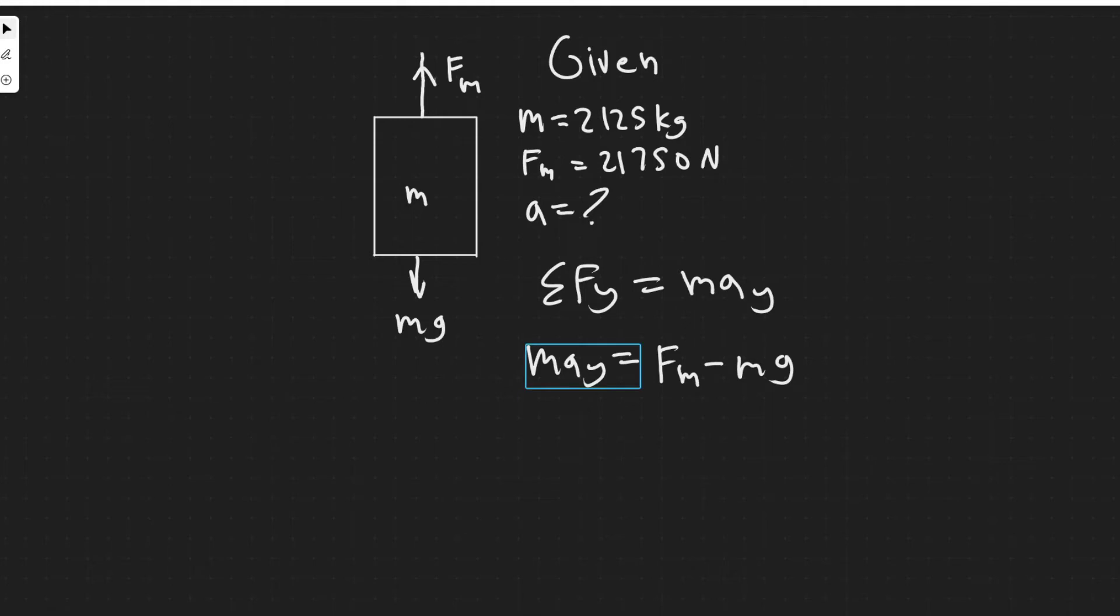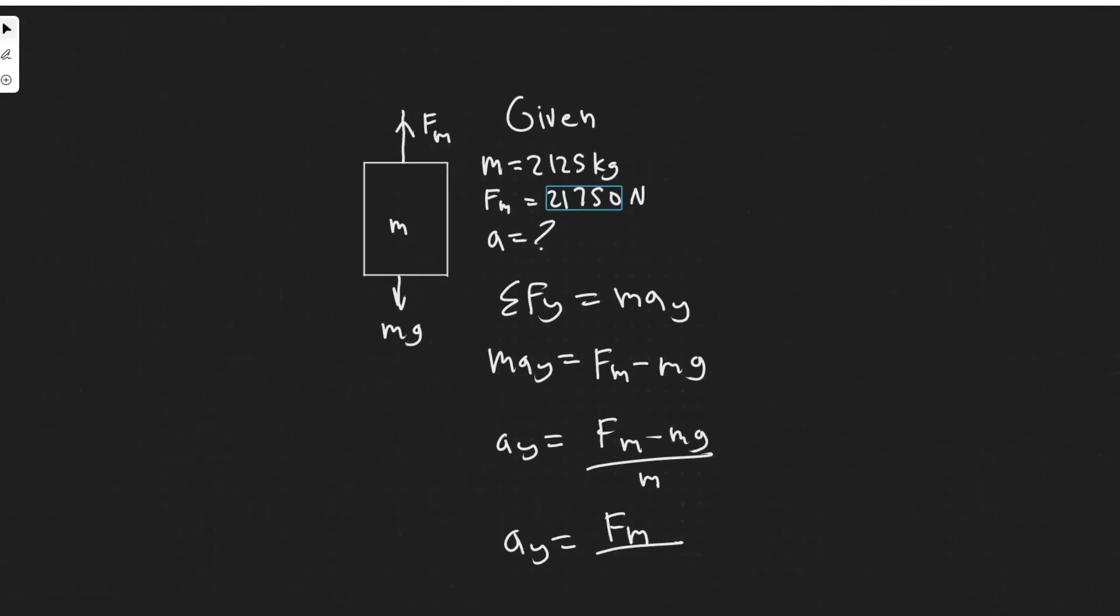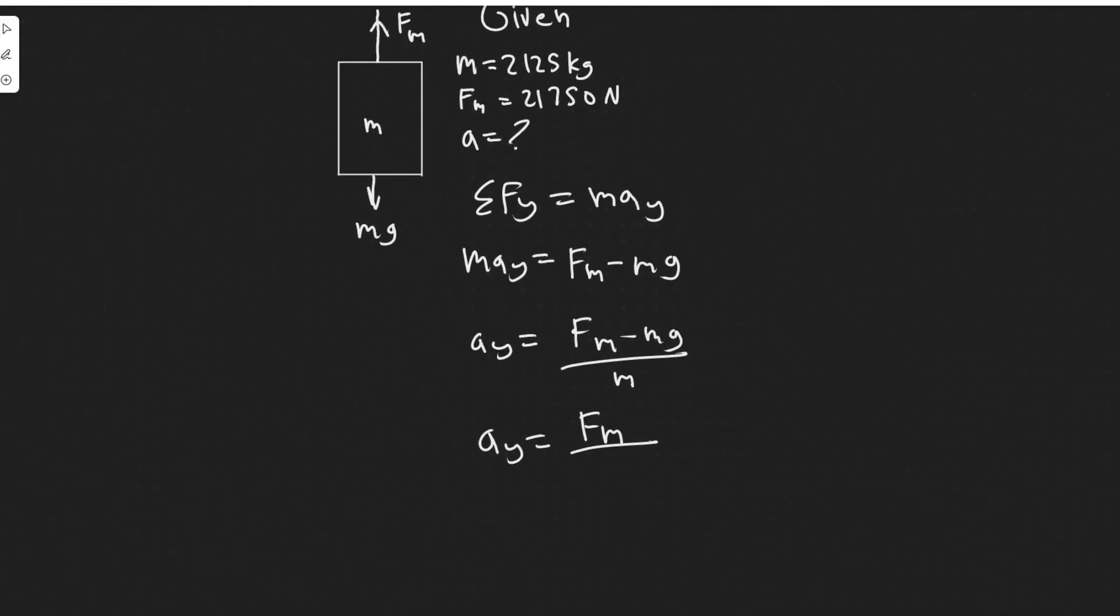And what we're trying to find is the acceleration in the y, or a_y. So if we want a_y, you just do F_n minus mg divided by m. So a_y equals the maximum force, the force being applied on this cable, divided by m minus g. The m cancels on the mg term, so it's just minus g.